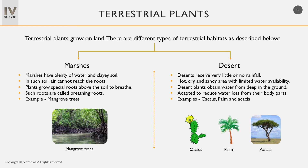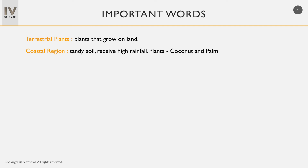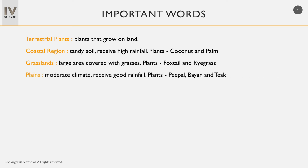We have seen the major terrestrial habitats. Let us review a few important words we learned in this video. Terrestrial plants grow on land. Coastal regions have sandy soil and receive high rainfall — common trees are coconut and palm. Grasslands are large areas covered with grasses; foxtail and ryegrass are common plants. Plains have a moderate climate with good rainfall; common trees are peepal, banyan, and teak.